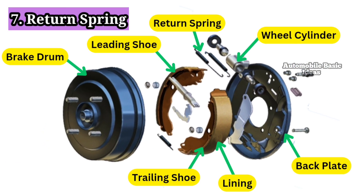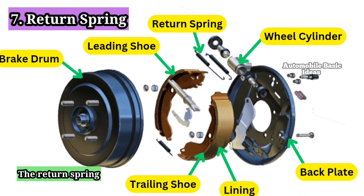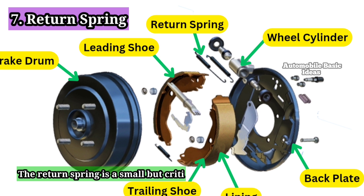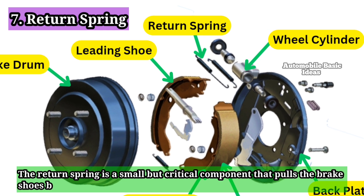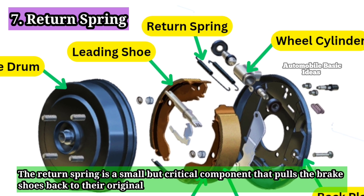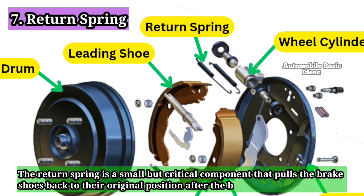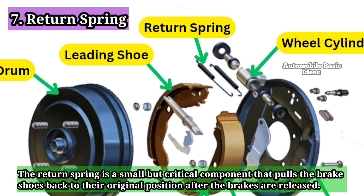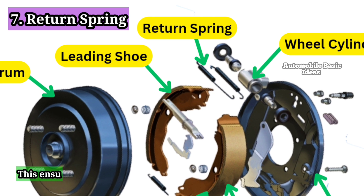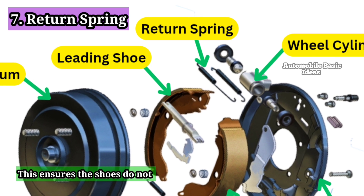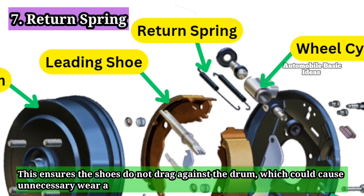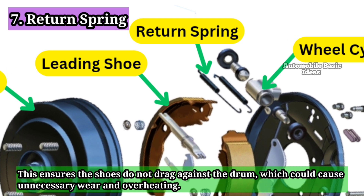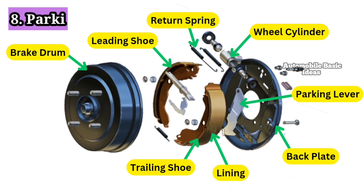7. Return spring. The return spring is a small but critical component that pulls the brake shoes back to their original position after the brakes are released. This ensures the shoes do not drag against the drum, which could cause unnecessary wear and overheating.